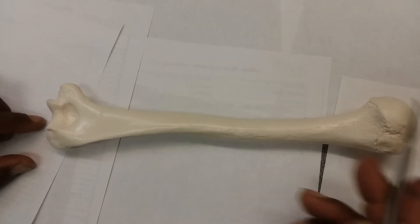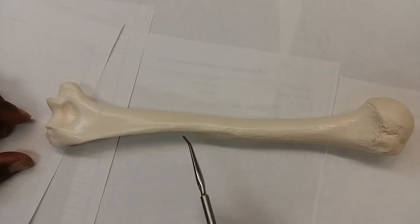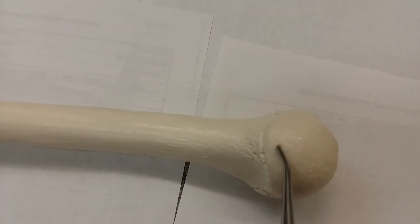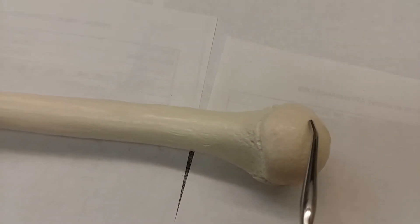Hi. This bone right here is called the humerus. The head of the humerus is this section right here. This is the head of the humerus.